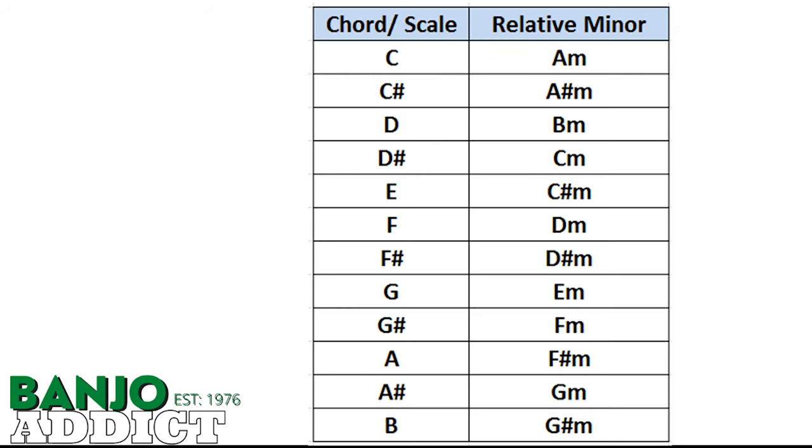Looking at this picture right here, you will see that a C major scale's relative minor is A minor. A C sharp major scale's relative minor is an A sharp minor. But instead of remembering all of that, there's a quick way to figure out a major scale's relative minor.